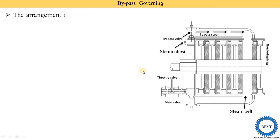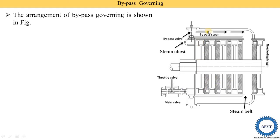Here you see the complete diagram of the bypass governing system. Steam first comes from the boiler and enters the throttle valve, also called the main valve. From the main valve it enters the nozzle, and from there into the fixed blades and moving blades. There is also a bypass valve here, so additional bypass steam is supplied through this bypass valve and mixed with the steam coming out from the high pressure stage.